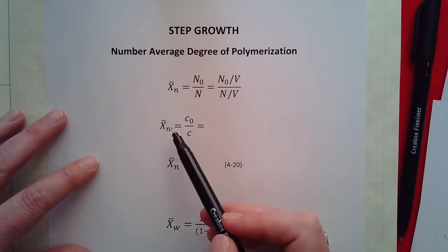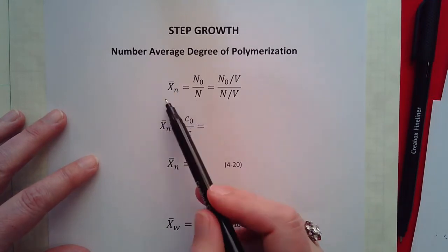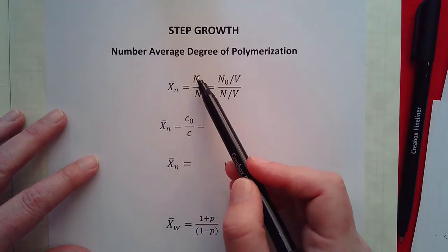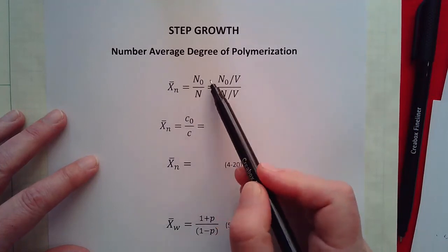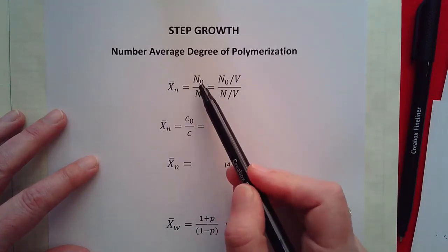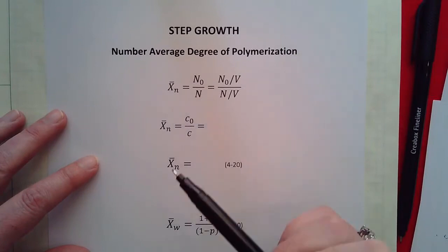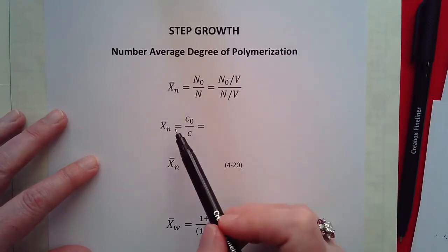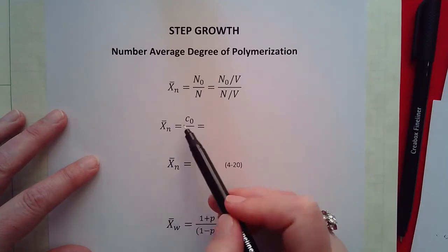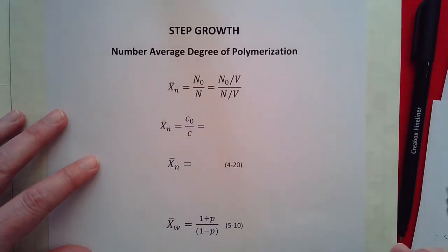...the number average degree of polymerization for step growth polymers. And we can quickly redo that derivation because our number average degree of polymerization is our total number of monomers that we started with by the number of chains we ended up with. And if we divide both of that by volume we've now got it as our initial concentration of acids or alcohols divided by our final concentration of acids or alcohols.